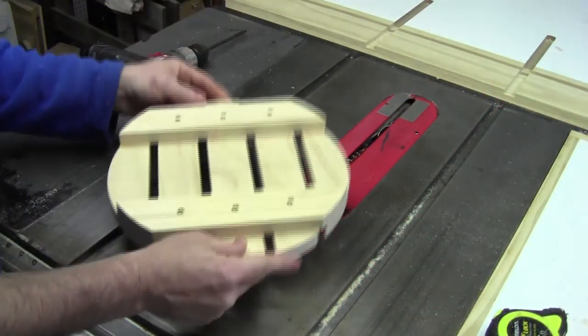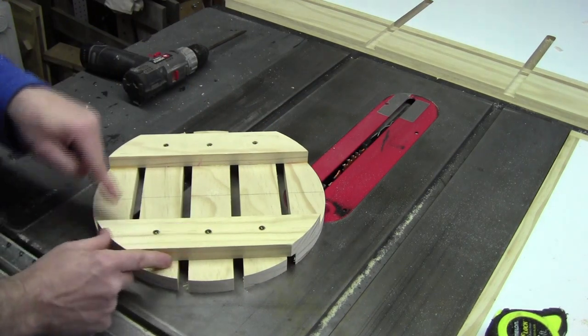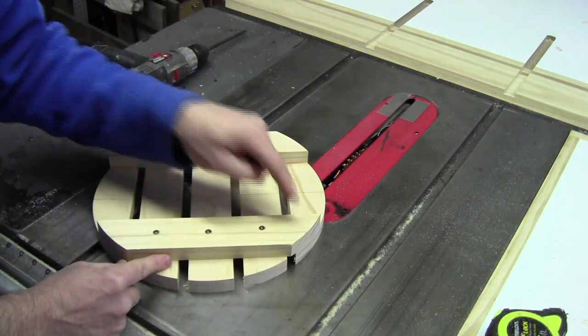With the circle cut out, I'll now go ahead and add four screws on these end pieces here where we did not put a screw.